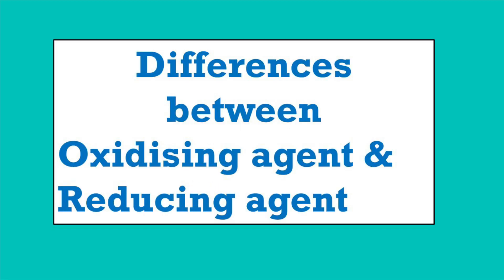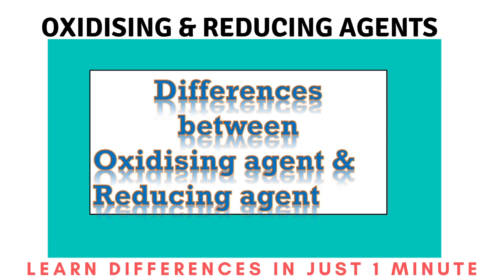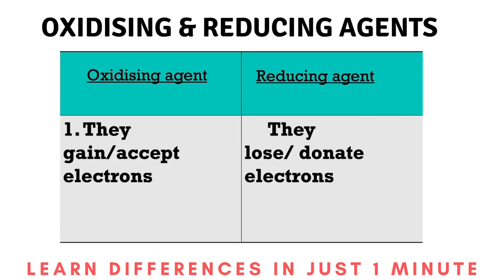Differences between oxidizing and reducing agents. Oxidizing agents gain electrons, but reducing agents lose electrons — that means they donate electrons.